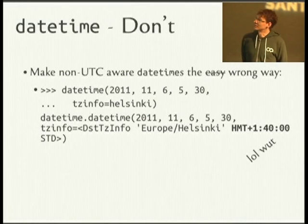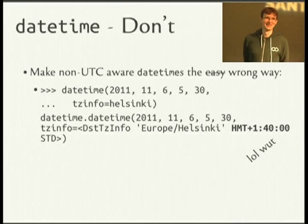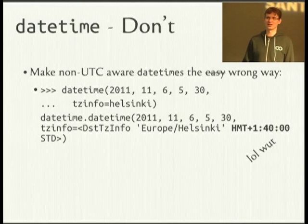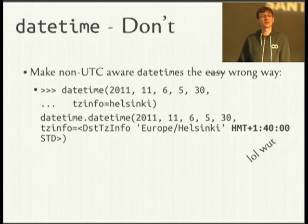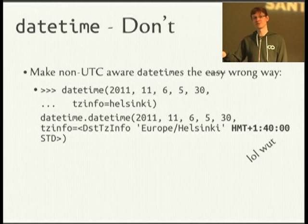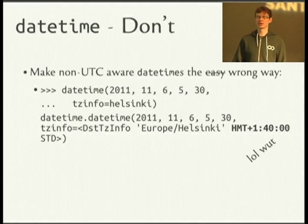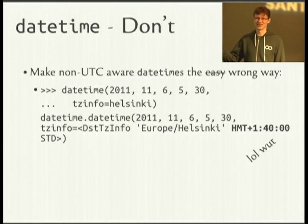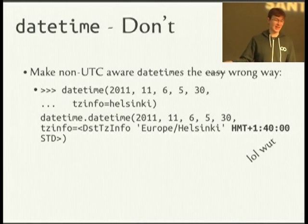Even worse if you're in Helsinki — what you get is HMT+1:40. What happens is the timezone information object, if you don't tell it anything, just has to pick the first timezone it knows about. Helsinki had a historical timezone that was an hour and 40 minutes off of UTC. As far as I know, nothing in the world is an hour and 40 minutes off now — everything's in 15-minute increments. There are a few places like India on a 30-minute increment and Newfoundland and Labrador on a half-hour increment, but nothing like that. That's obviously just flat out wrong.